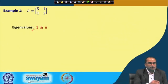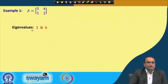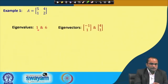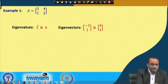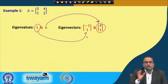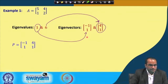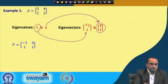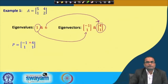Having these distinct eigenvalues, we find two linearly independent eigenvectors and can diagonalize this matrix. The eigenvector corresponding to λ = 1 is [−1, 1], and corresponding to λ = 6 it is [4, 1]. We form the modal matrix P with these as columns: first column [−1, 1], second column [4, 1].